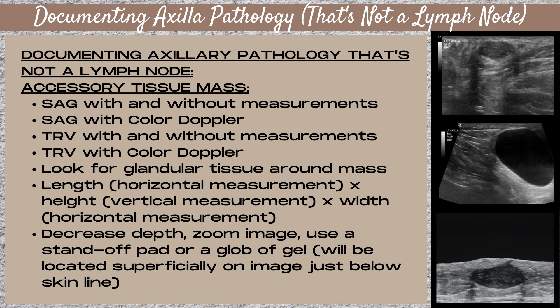To document an accessory tissue mass, you want to take a sagittal image with and without measurements, a sagittal image with color Doppler, a transverse image with and without measurements, and a transverse image with color Doppler. Look for glandular tissue around the mass. If the glandular tissue is located just below the skin line, then it's accessory breast tissue. If the glandular tissue is located deeper and is connected to the tissue of the upper outer quadrant of the breast, then it's axillary tail tissue.